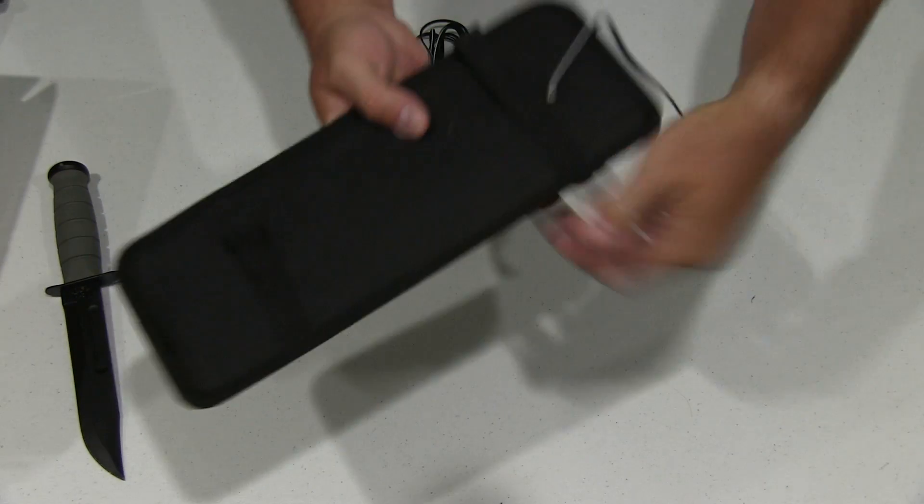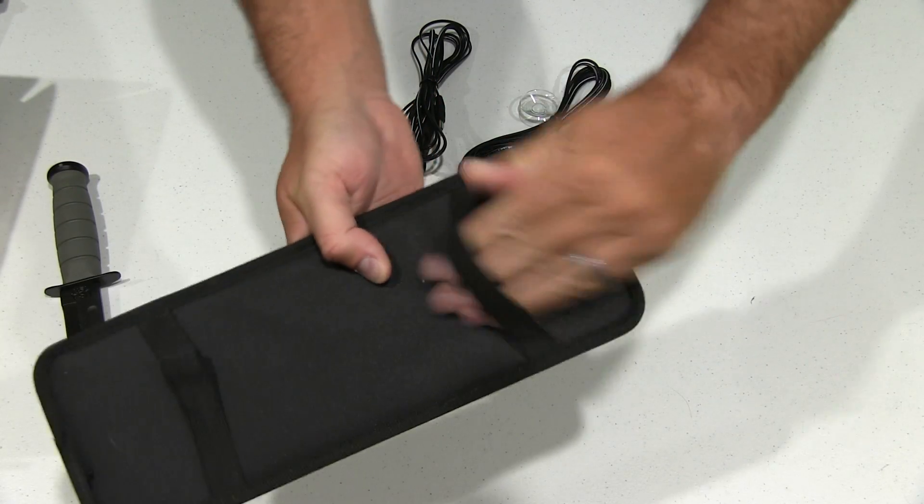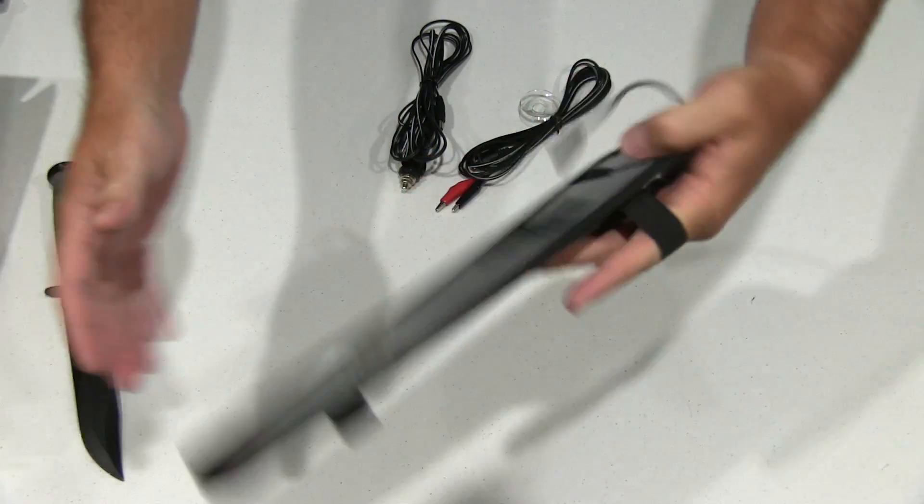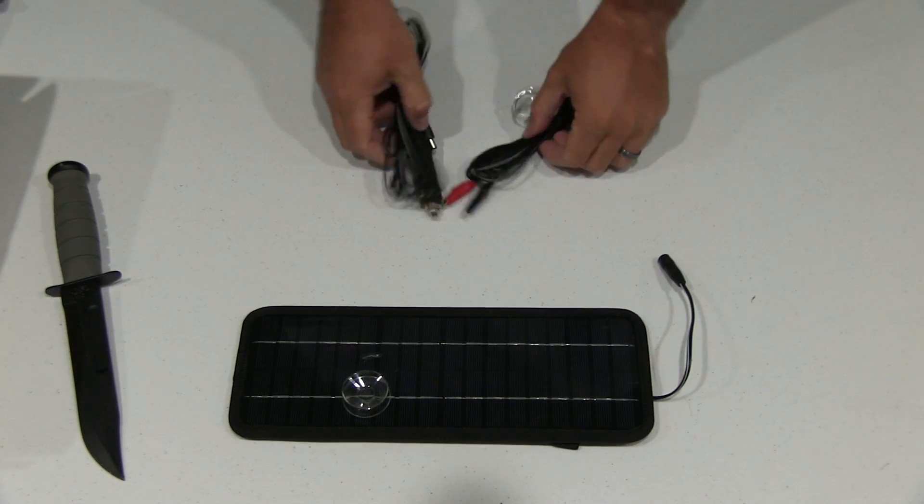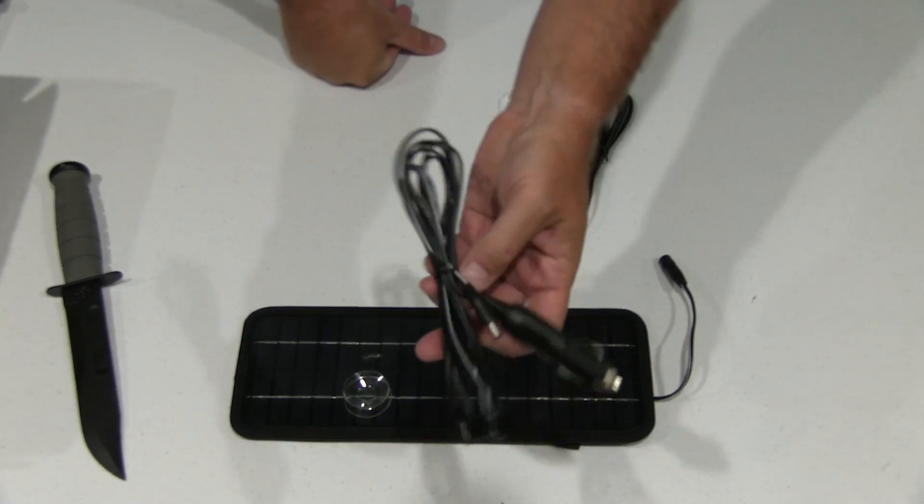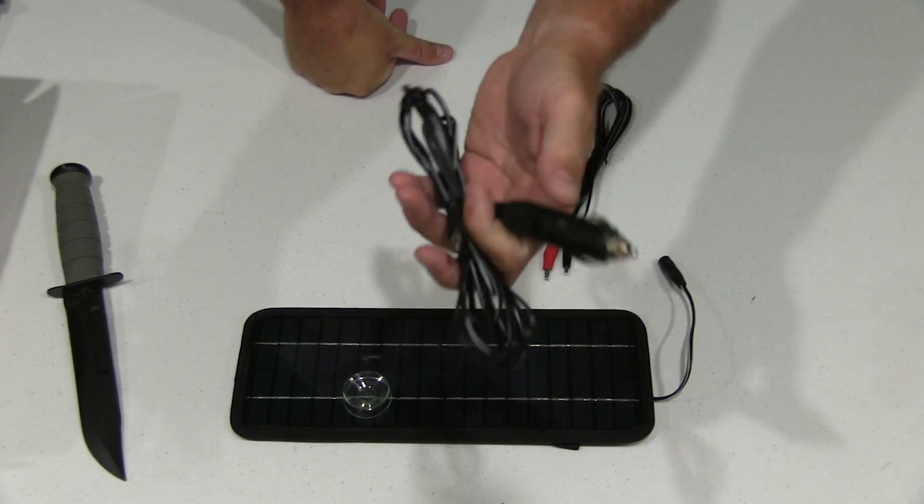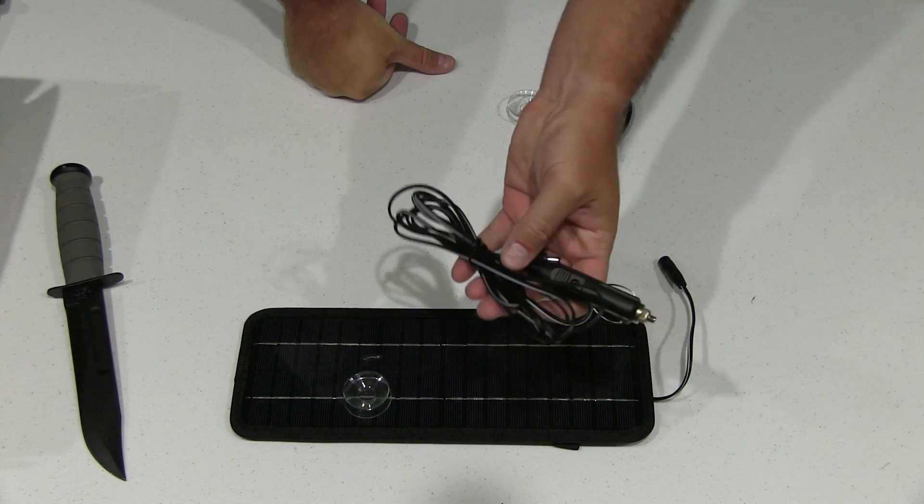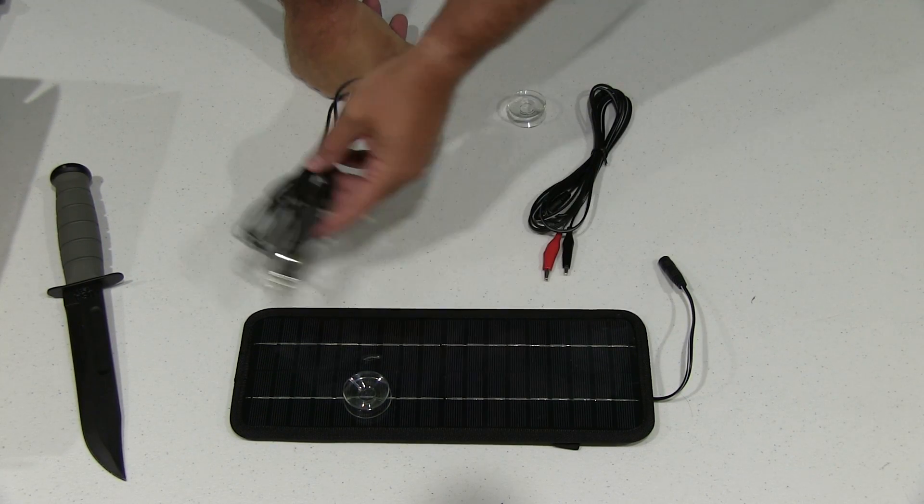And actually, and then the other side you've got a little thing right here. I guess if you wanted to put it on the visor of a car or whatever. So with this adapter you can plug this into your car or boat cigarette lighter and trickle charge your battery.